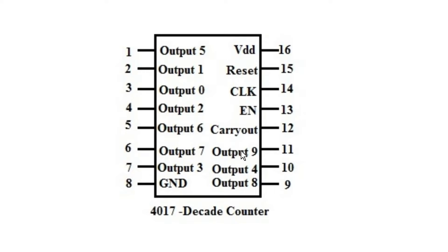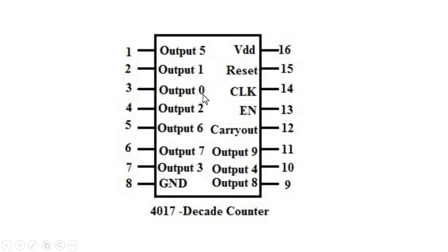In a one-hot decade counter, in the first clock cycle output 0 will be high and all the other output signals will be 0. In the second clock cycle, output 1 will go high and all other signals will be 0. In the third clock cycle, output 2 will go high and all other output signals will be 0, and so on. In the tenth clock cycle, output 9 will go high and all other signals will be 0. In the eleventh clock cycle, output 0 will go high again and all other output signals will be 0. This is how the decade counter works.